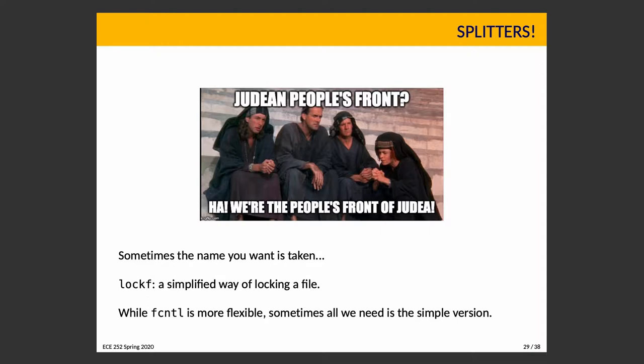Sometimes the name you want is taken — like the Judean People's Front versus the People's Front of Judea. We've learned about flock for locking a file, and about fcntl for more flexible locking. There is a third way and the name we want is taken, so we use lockf. Getting mixed up between lockf and flock is a legitimate concern — they're similar names — but you'll become familiar with them when working with them, and the compiler will tell you immediately if your arguments are wrong.